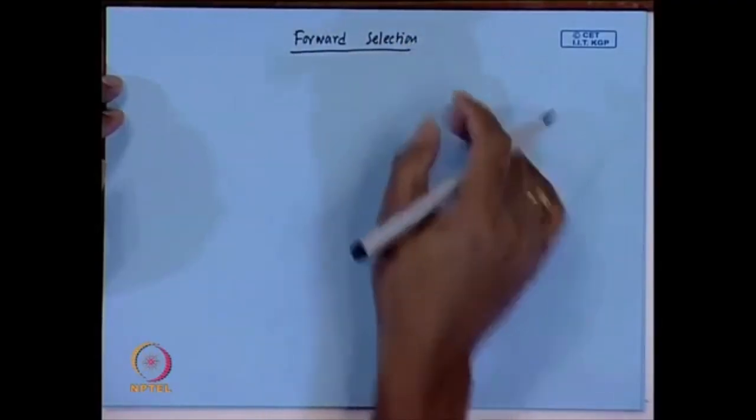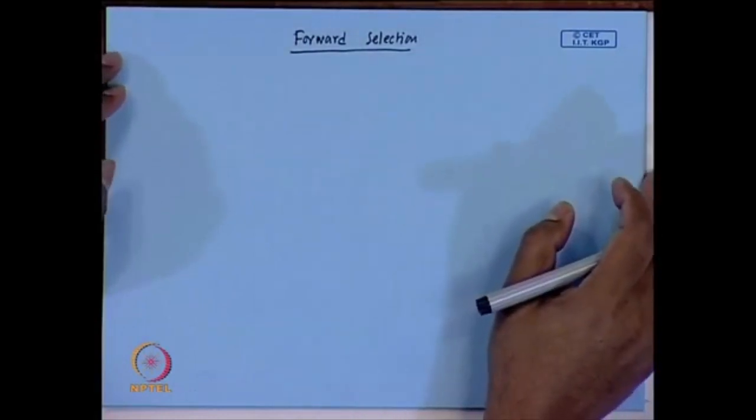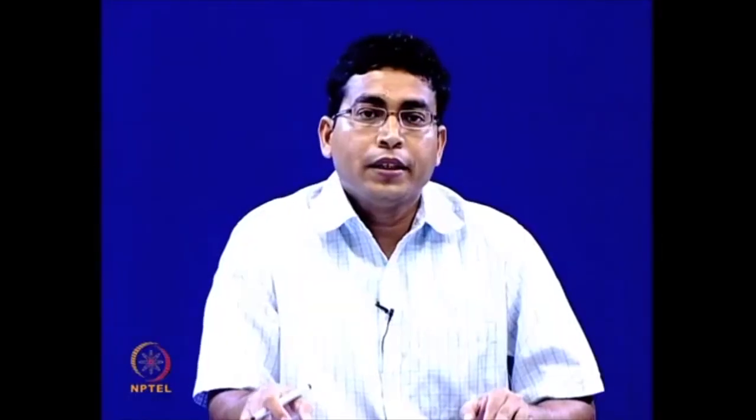The basic motivation behind forward selection is that we start with no regressor in the model, and then at every step we add the most relevant regressor to the model. So every step we keep on adding one regressor to the model, and there is some stopping criteria. We will talk about those things now.